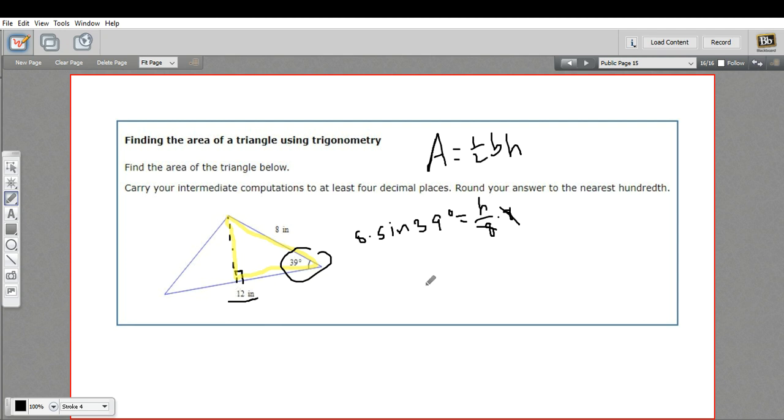I know the base of this triangle is 12, so we can say area equals one-half, the base which is 12, times the height, which is 8 times the sine of 39 degrees.